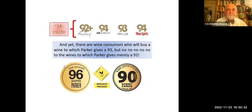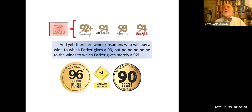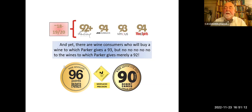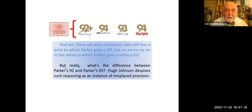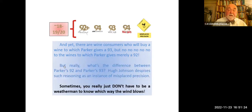And yet there are wine consumers who will not buy a wine to which Parker gives a 93, but will buy a wine to which Parker gives 93 — but no wines which Parker gives below 90. Why is this perverse? Because yes, 90 or 95 out of 100 denotes what's probably a pretty good wine, but there are lots of pretty good wines that fall below that range — the kind of wine that would grace the table of any French family on Sunday dinner, which is a celebration. Many American consumers would just look down their nose and say, 'I can't even touch that.' It is misplaced precision. What's the difference between Parker's 92 and 93? Hugh Johnson is very critical of this kind of reasoning. Again, sometimes you really don't have to be a weatherman to know which way the wind blows.